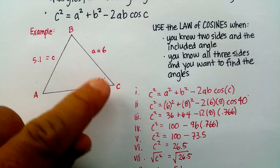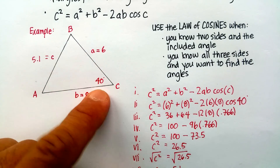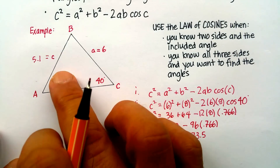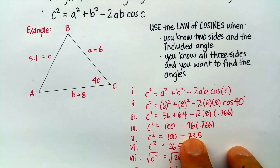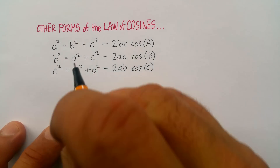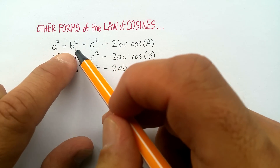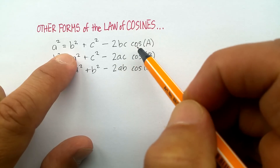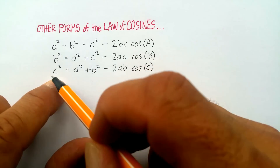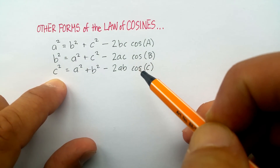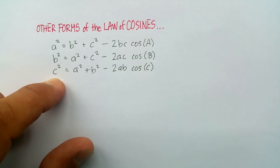That's how you find the third side length if you know two sides and the included angle. In this case we used c squared equals a squared plus b squared minus 2ab cosine C. But there are other forms: if you know angle A, use a squared equals b squared plus c squared minus 2bc cosine A; if you know angle B, use the corresponding form. Just be observant about what information you know and choose the correct formula.